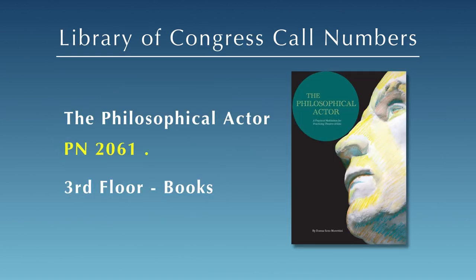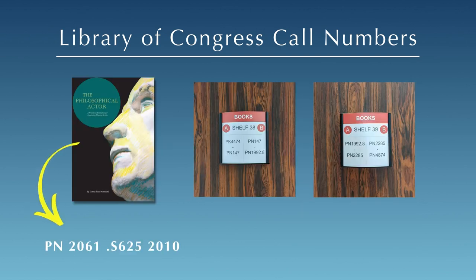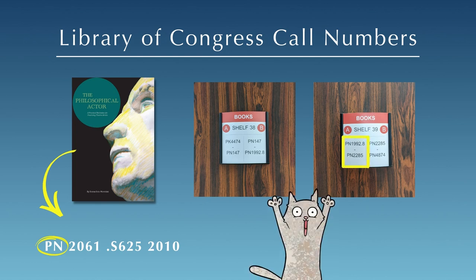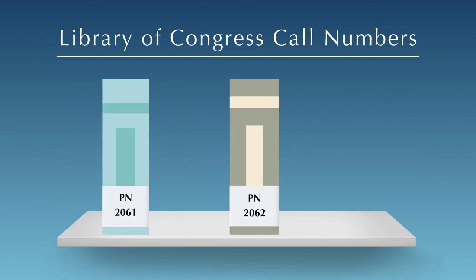Library of Congress call numbers begin with one or two letters, followed by a series of numbers and letters. To find an item, look at the first letter or letters, then find the corresponding shelf or shelves with the same letters.